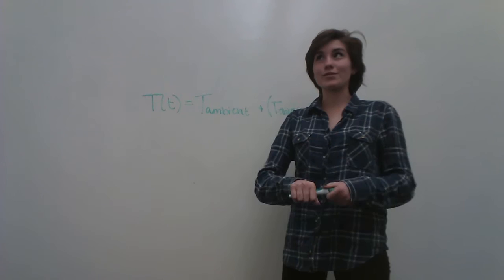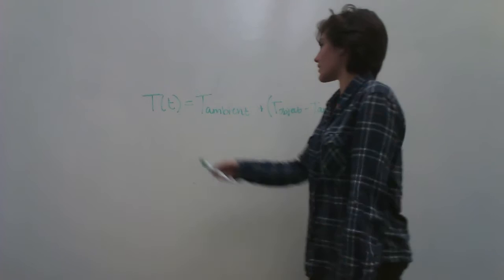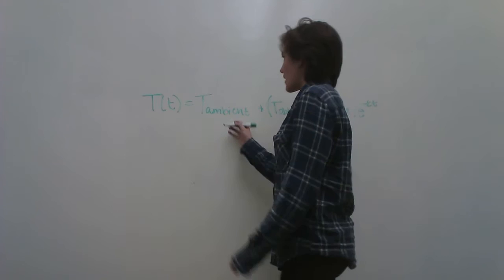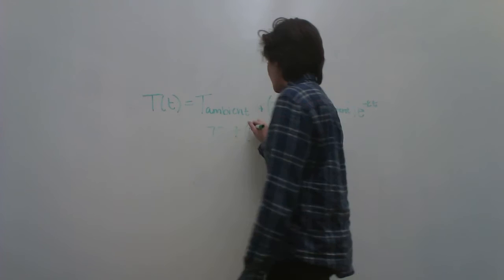Okay, so this is a Newton's cooling law problem. The equation is going to be temperature equals temperature ambient plus temperature object minus temperature ambient times E raised to the negative kT. So the T ambient is going to be 70 and the T object...